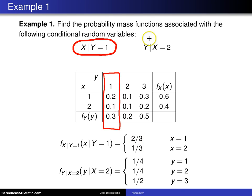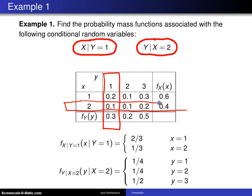Now the second random variable of interest is Y given X is equal to 2. When we know that X equals 2, we know we are in that row and can ignore the rest. We take the joint value 0.1 divided by the marginal value 0.4, which gives one fourth, associated with Y equals 1.